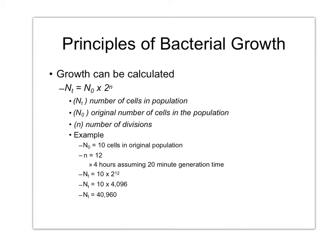With one starting cell, 24 hours times 3 generations per hour equals 72 generation times. So you would have 1 times 2 to the 72nd power. I can't do that one in my head, so let me pop out my phone. 2 to the 72nd power equals 4.7 times 10 to the 21st.